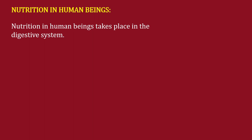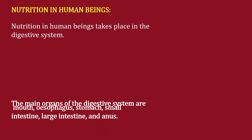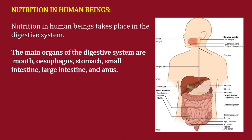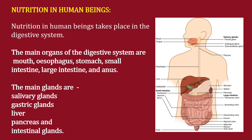Nutrition in human beings takes place in the digestive system. The main organs are the mouth, esophagus, stomach, small intestine, large intestine, and anus. The main glands that help in digestion are salivary glands, gastric glands, liver, pancreas, and intestinal glands. The nutrition process begins in the mouth and ends at the anus, and we will study each organ one by one.